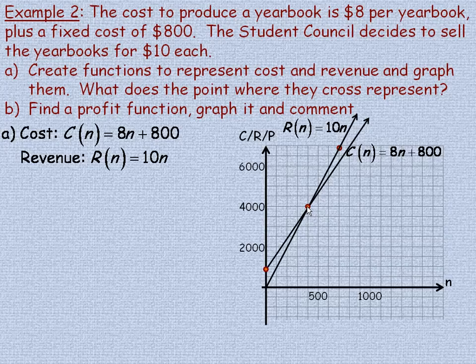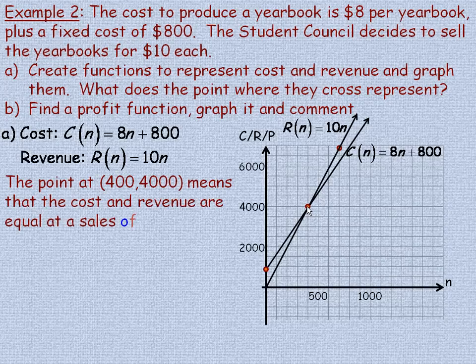That intersection point represents the place — or the number of yearbooks sold — where revenue and costs are exactly the same. In business circles, this is referred to as the break-even point. That's the point at which the money you're taking in exactly covers the cost. You haven't made any money and you haven't lost any money.